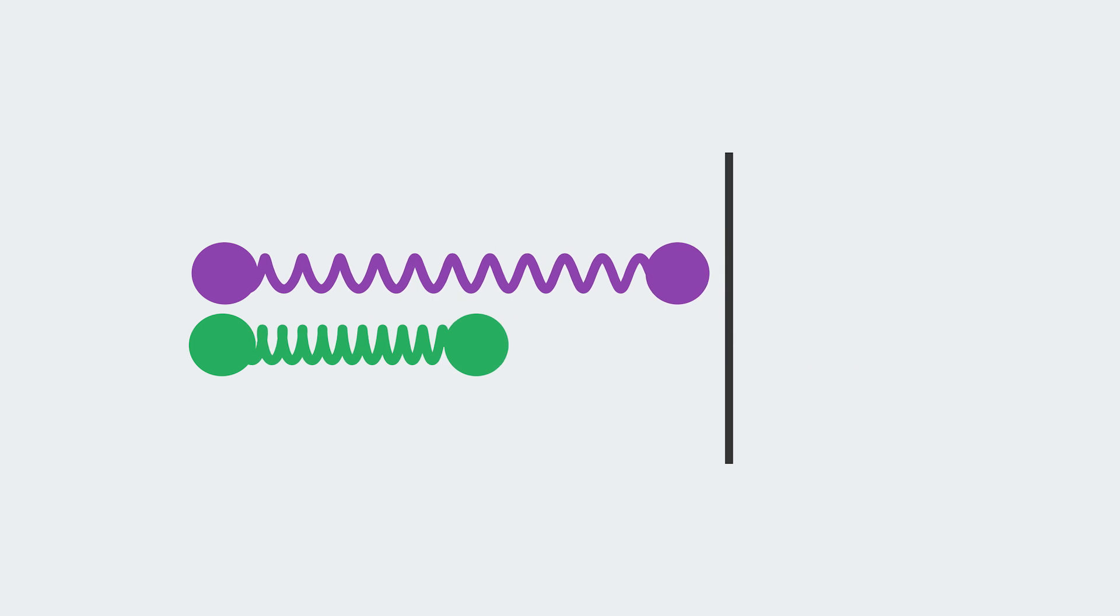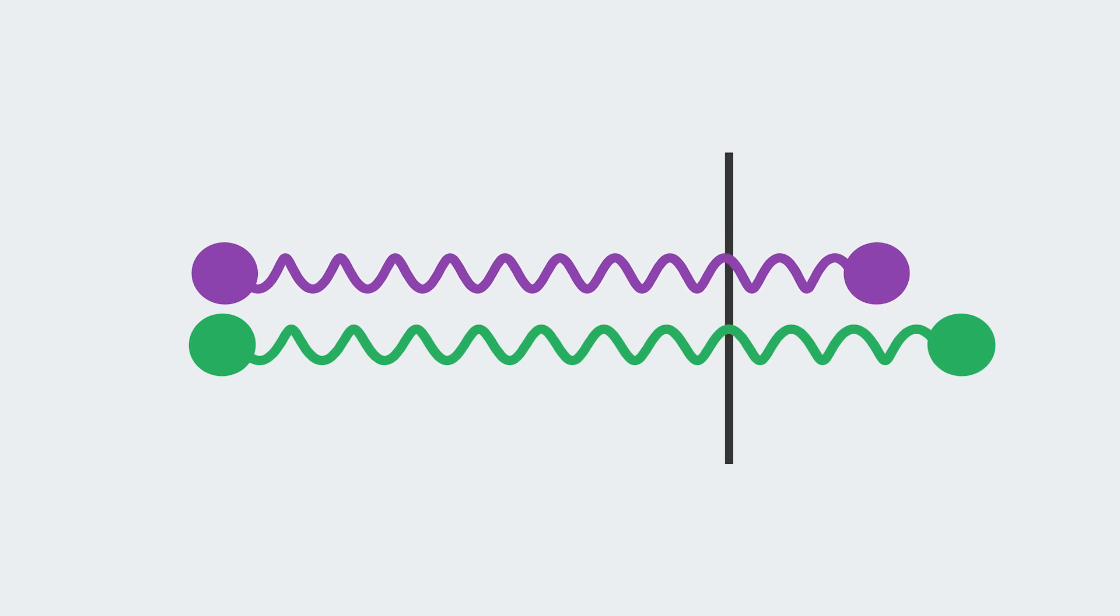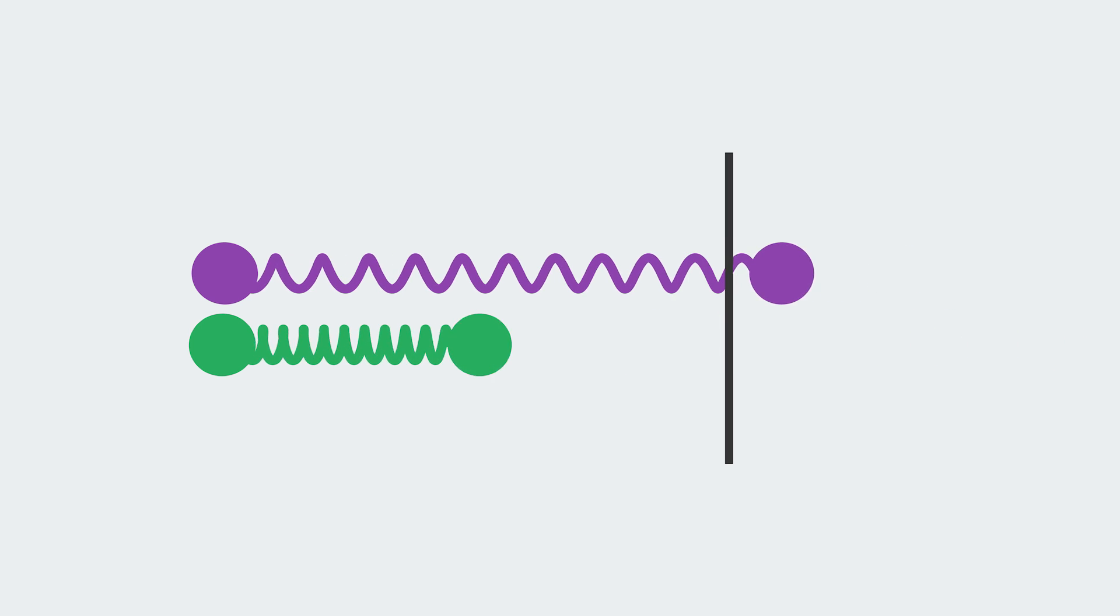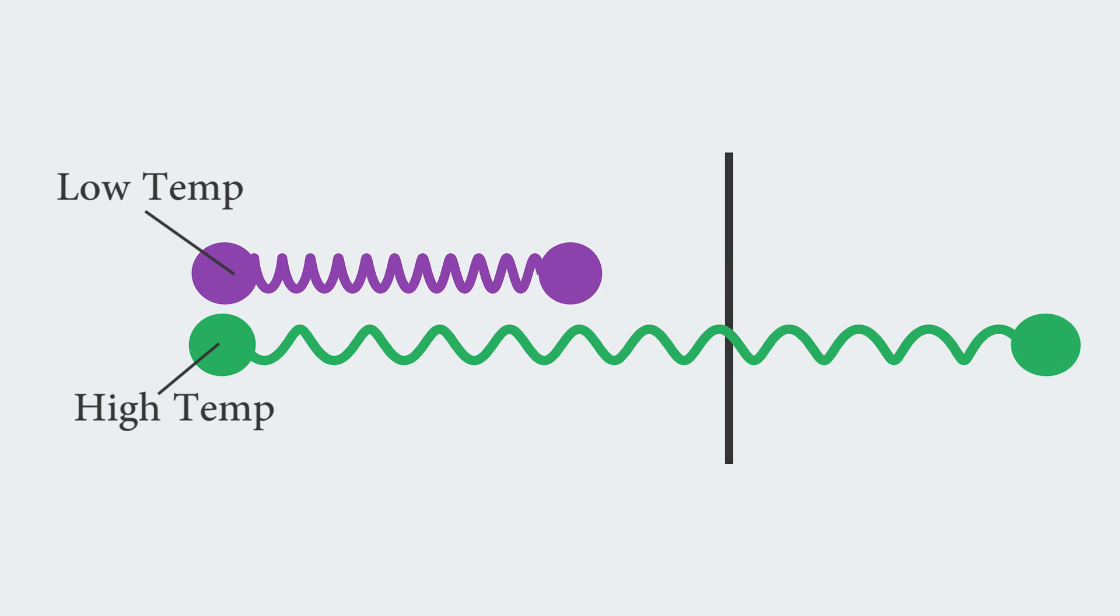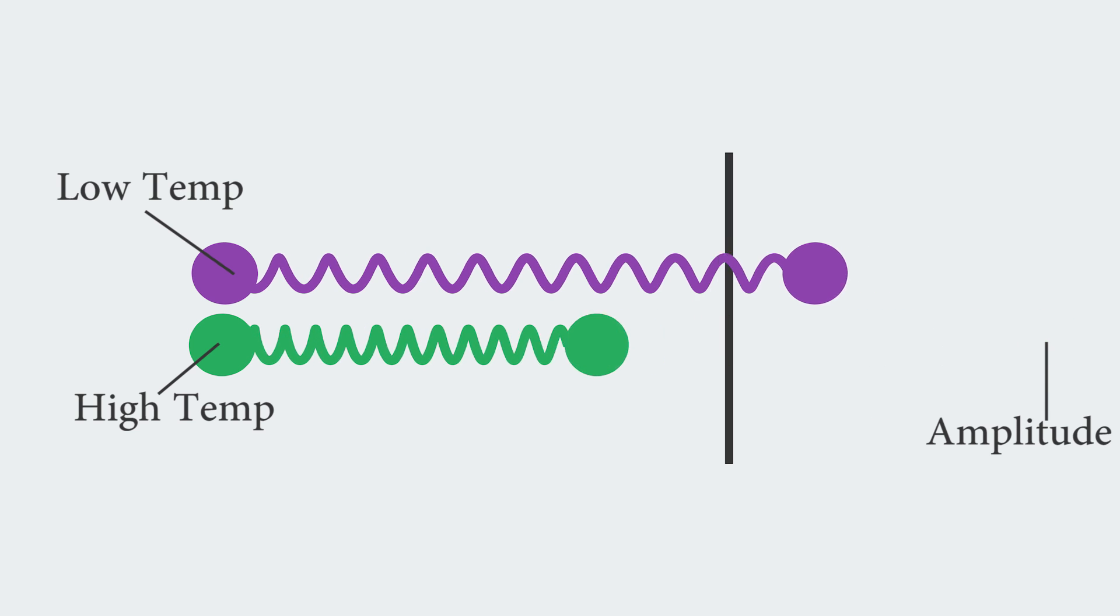So the purple would represent a substance with a lower temperature and the green will represent molecules with a higher temperature. You can clearly see that it has a bigger amplitude. It has a bigger reach than the purple.